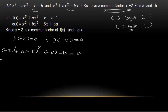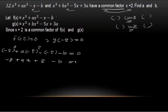Simplifying: minus 8 plus 4a plus 2 minus b equals 0. So 4a minus b equals 6. That is equation one.